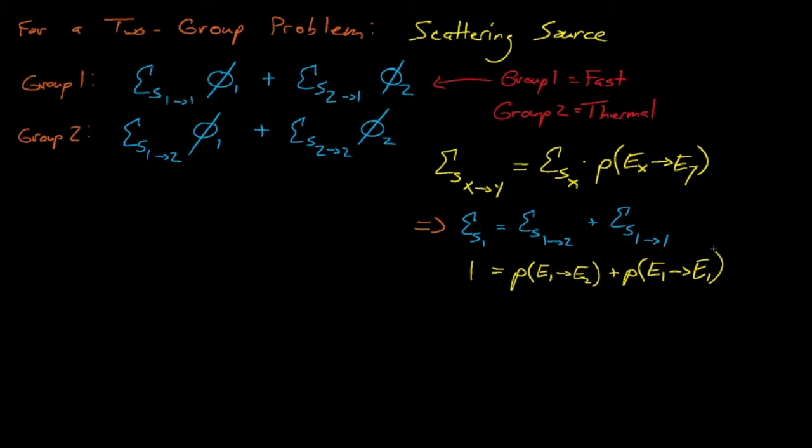For group 2, we see something similar. The scattering source is the group 1-to-2 scattering cross-section times the group 1 flux, plus the group 2-to-2 scattering cross-section times the group 2 flux. Now, we can make some simplifications to these equations based on how we define fast and thermal energies.